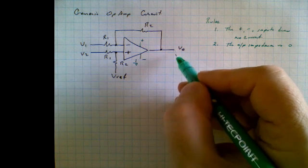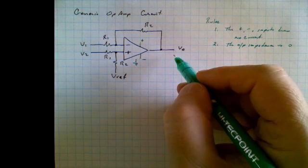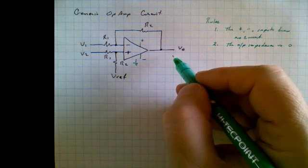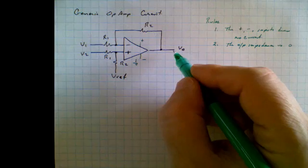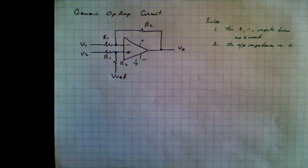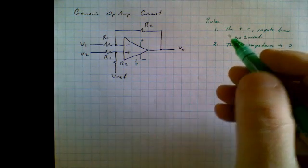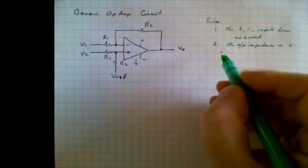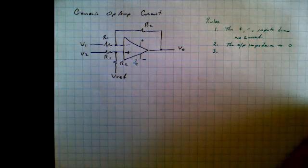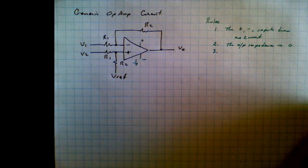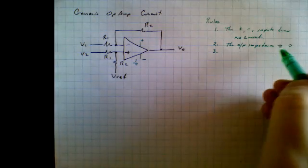The second rule is that the output impedance is zero. So if we put a load across here, even if it was a very small load, it would make no difference. That's to say we couldn't load the circuit down. We put a kilo ohm here, we put one ohm here, it makes no difference. Now within a reason of course that's not entirely true, but it's true for the vast, vast majority of cases of circuits that we're going to be looking at. And the third rule is a very, very interesting one. These two are simply rules which correspond to any ideal amplifier. The input has infinite impedance, the output has zero impedance.